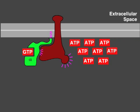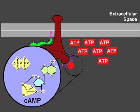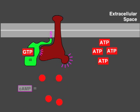Activated adenyl cyclase converts ATP to cyclic AMP, which then acts as a second messenger that relays the signal from the G protein-coupled receptor to other components in the cell.